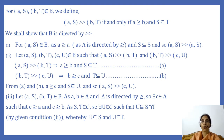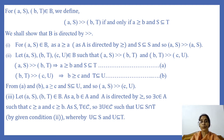For ordered pairs (a, S) and (b, T) in B, we define (a, S) ≫ (b, T) if and only if a ≥ b and S ⊆ T. We shall show that B is directed by the relation ≫.